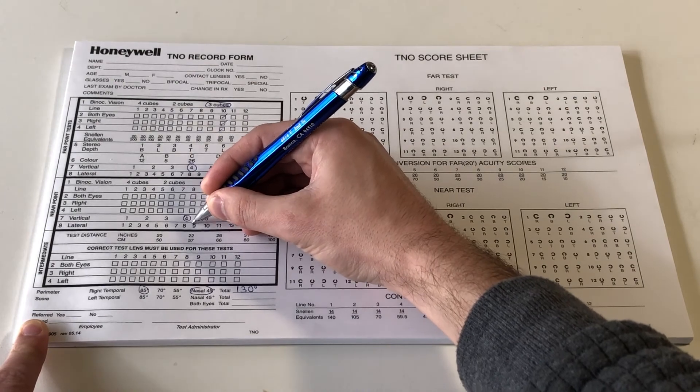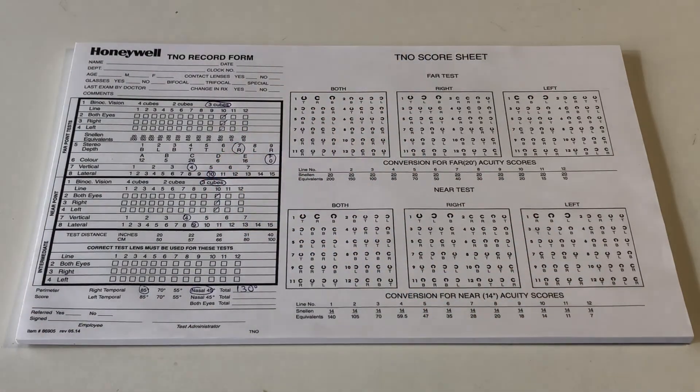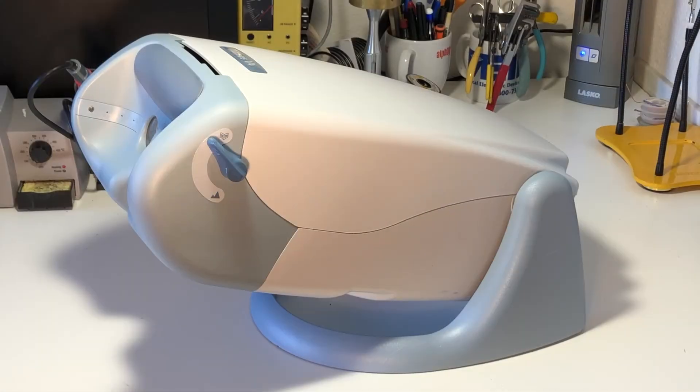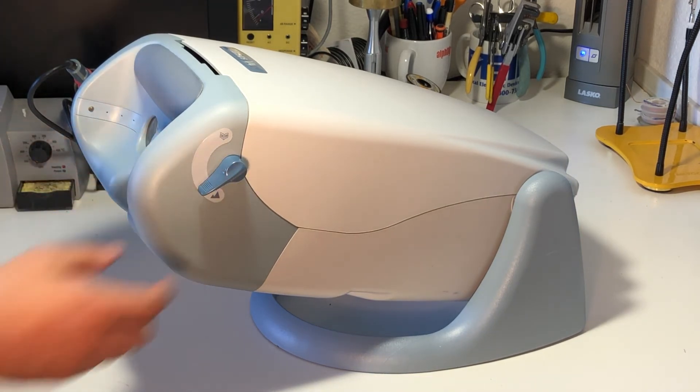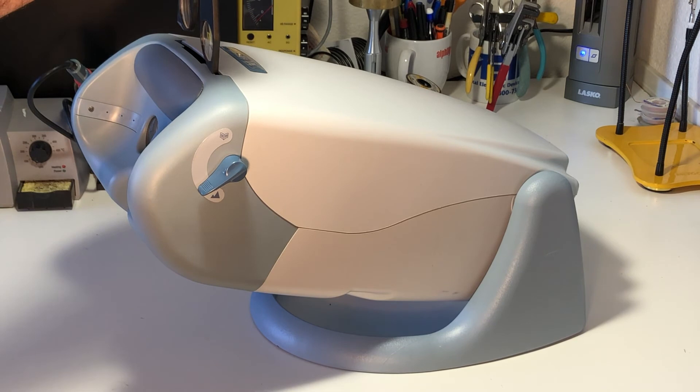Now we will complete the intermediate portion of the test. Change the near far lever to the far position and slide the intermediate lens into the vision screener.